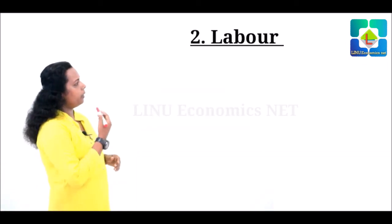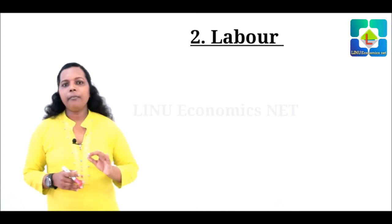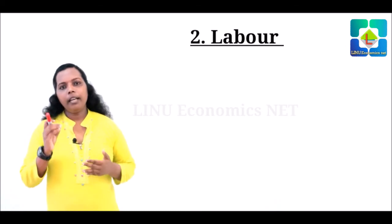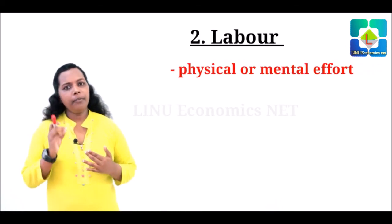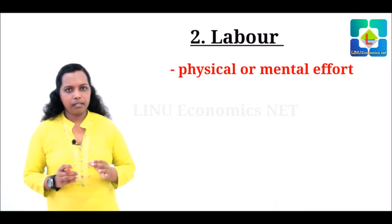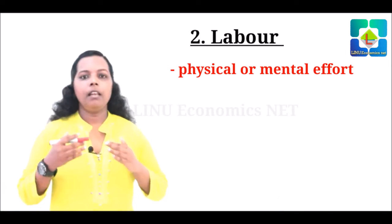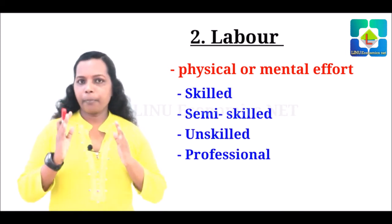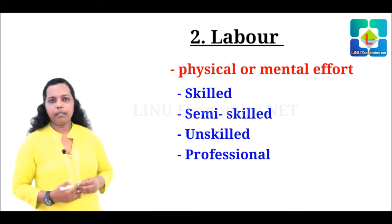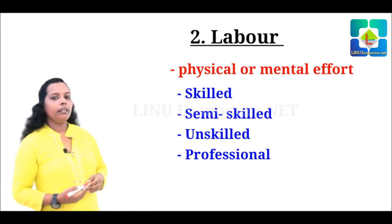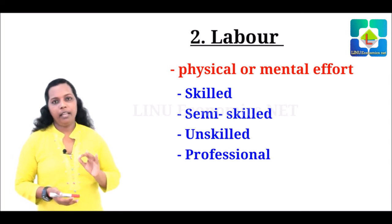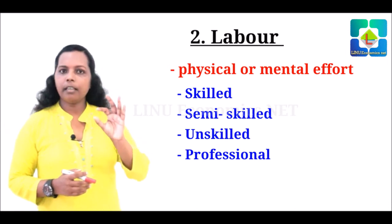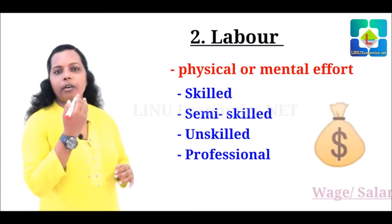The next factor of production is labor. I think this is a very familiar name. Labor is the mental or physical effort of human beings in the production process. Labor may be skilled, semi-skilled, unskilled, or professional. In our example of the wooden table, the carpenter is the labor. The reward of labor, or factor income of labor, is salary or wage.